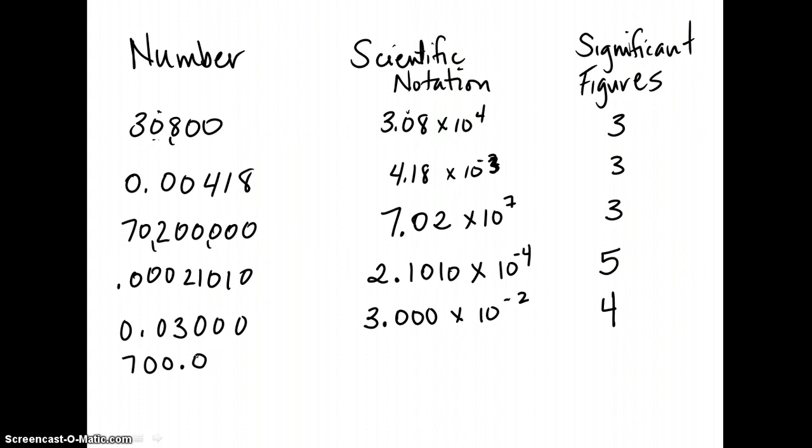And for this one here, these zeros, all three of them, are in fact in between two integers, even though it's more than one. So in this case, our scientific notation would look like this, times 10 to the, excuse me, positive second. Am I correct on that? Yes.